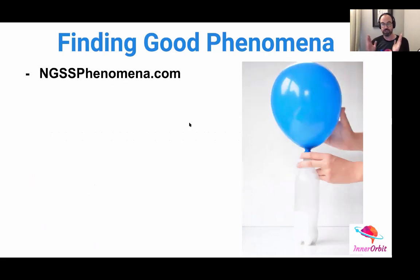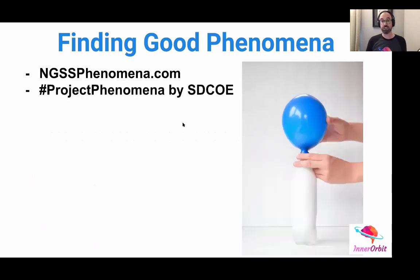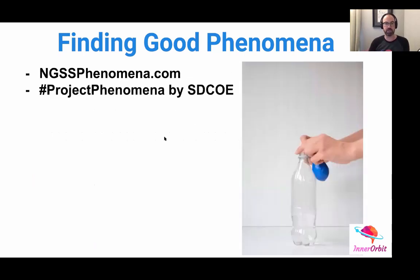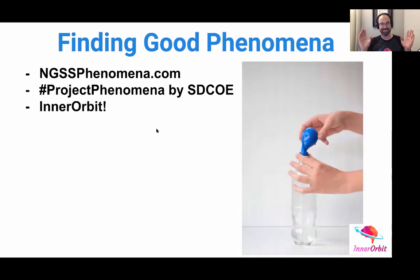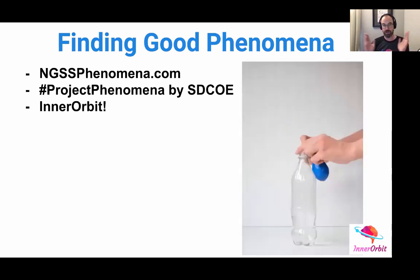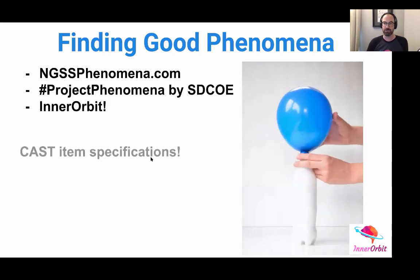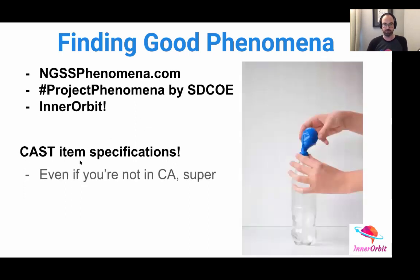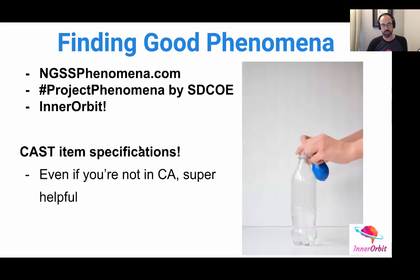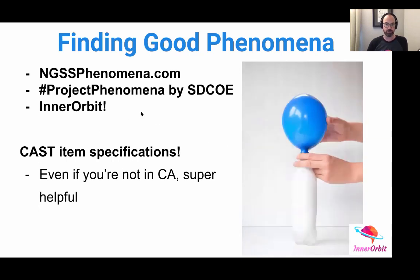Finding good phenomena — there are a few resources we've found. NGSSphenomena.com does a phenomenal job of providing good phenomena. Project Phenomena by San Diego County Office of Education has tons of phenomena. I'll post all of these links in the YouTube description so you can check them out. I'd also like to recommend Inner Orbit — we have hundreds of phenomena tied to assessment items with three-dimensional questions. You can try them out for free this spring. We professionally find novel and interesting phenomena so that you can assess. Also, the CAST item specifications — this is for the California science test, and even if you're not in California, it's super helpful.